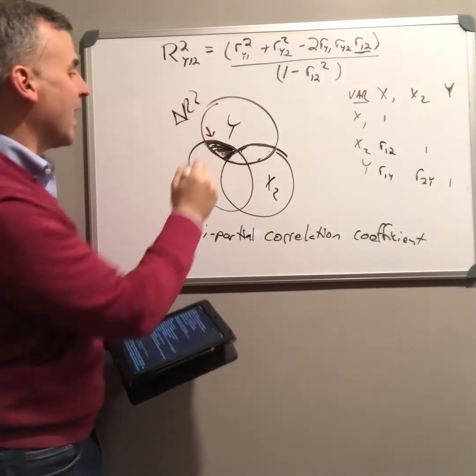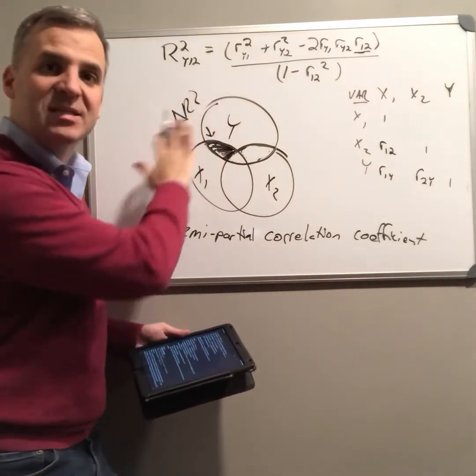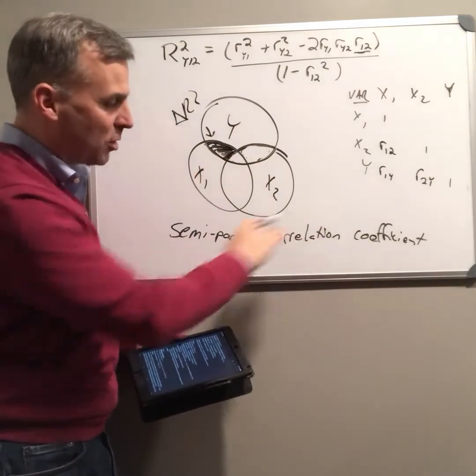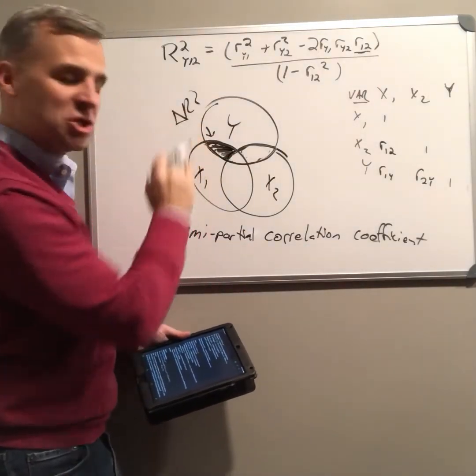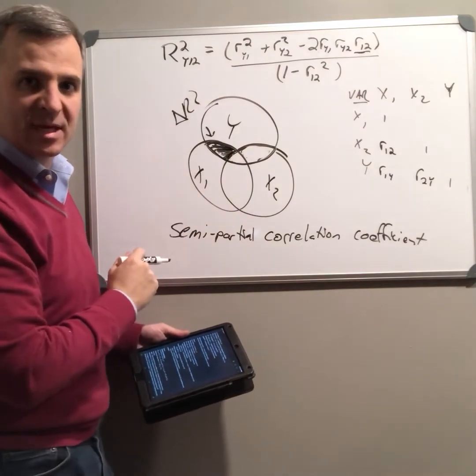This tells us then the change, the delta r squared. This is how much additional contribution, the semi-partial correlation coefficient, is the additional contribution of any particular variable.